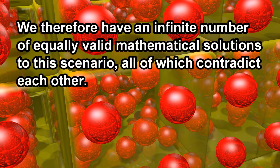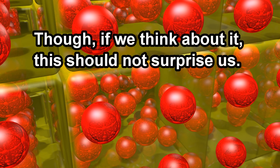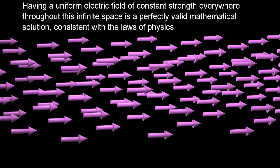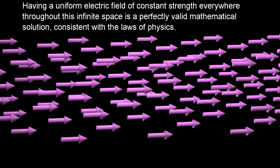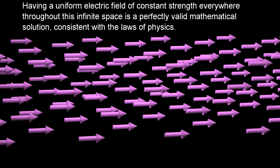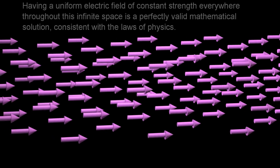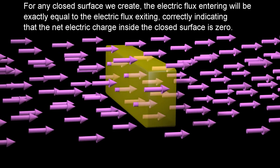We therefore have an infinite number of equally valid mathematical solutions to this scenario, all of which contradict each other. Though, if we think about it, this should not surprise us. Suppose we have an infinite space with no charged particles at all. Having a uniform electric field of constant strength everywhere throughout this infinite space is a perfectly valid mathematical solution, consistent with the laws of physics.